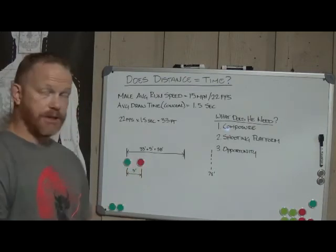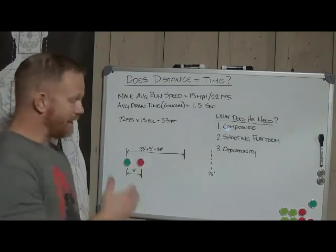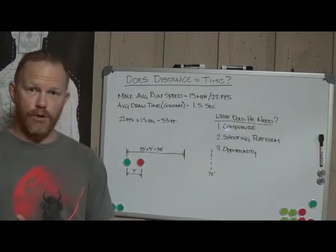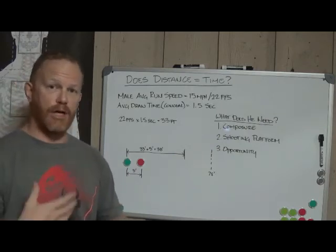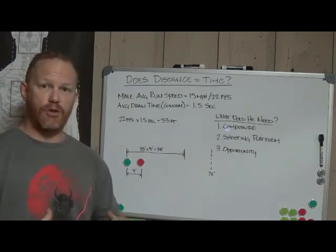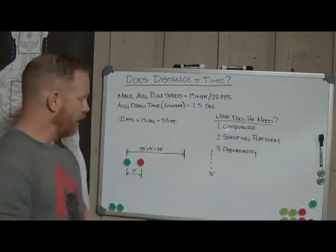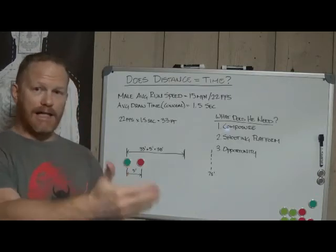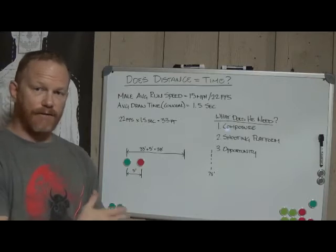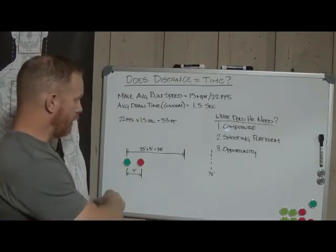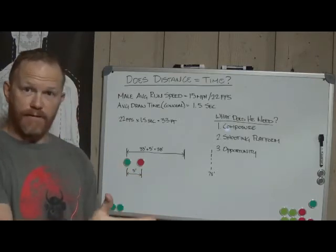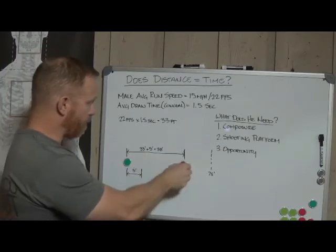So if I'm starting out at five feet away from a potential attacker and I see this individual go for his weapon, our natural tendency, our natural reaction is to run for safety. How far could I get in a second and a half if I'm five feet away? Well, I would get 33 feet plus my five feet, so that gives me 38 feet away.